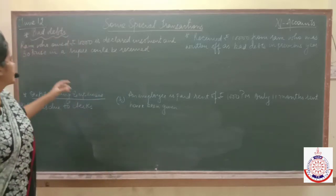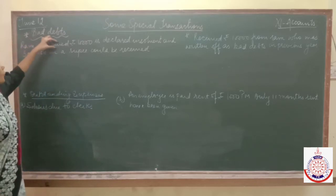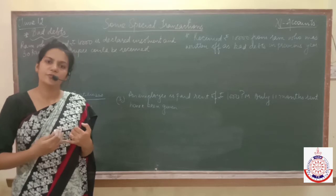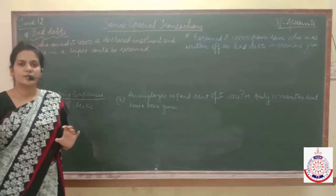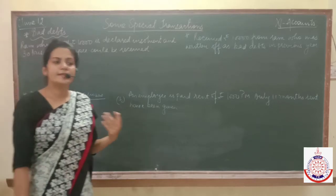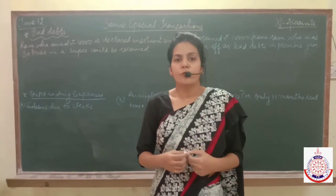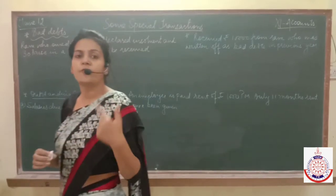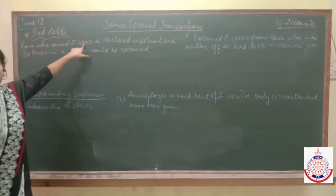In this case, Ram who owed rupees 10,000 is declared insolvent. Ram was our debtor — he owed 10,000 to the firm. Now Ram has been declared insolvent, meaning he doesn't have sufficient funds to make payment. Only 30 paisa in a rupee could be received, so he can only pay us 30 paisa per rupee. This means Ram will pay us 30% of the total amount of 10,000.